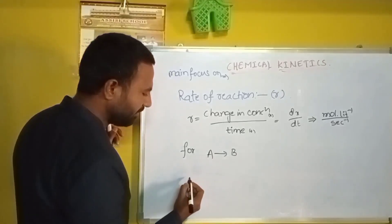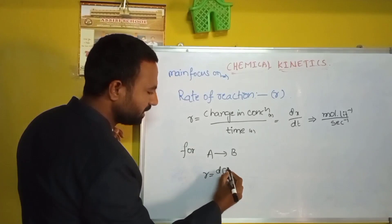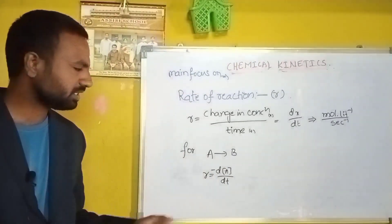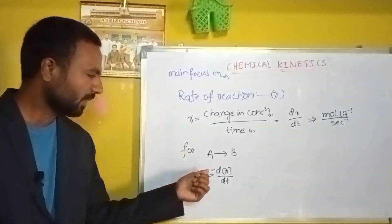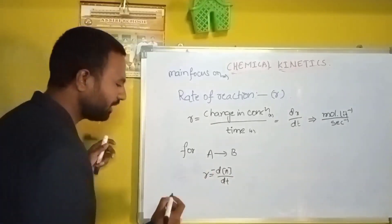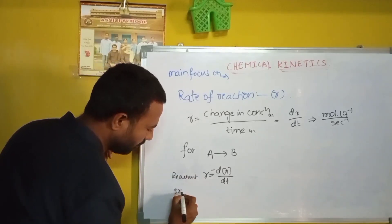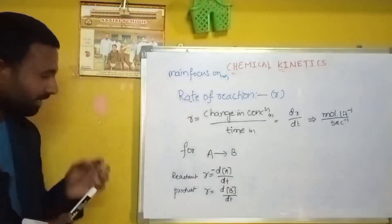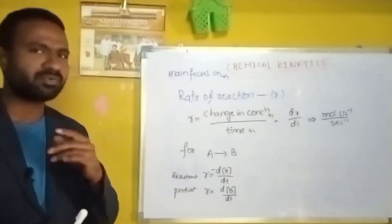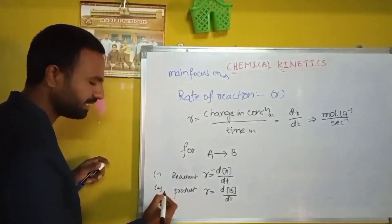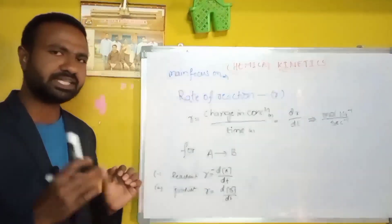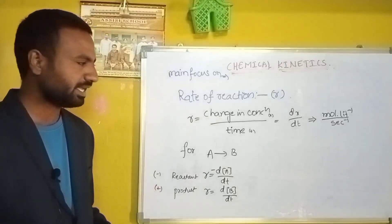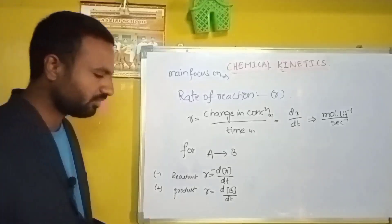According to the reactant, rate R equals −dA/dt. We keep a minus sign because reactant concentration always decreases. According to product formation, rate equals +dB/dt. The plus sign indicates increase in concentration of product. These minus and plus signs indicate whether concentration is decreasing or increasing.